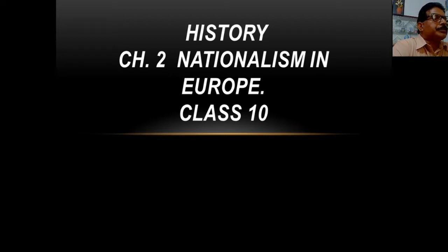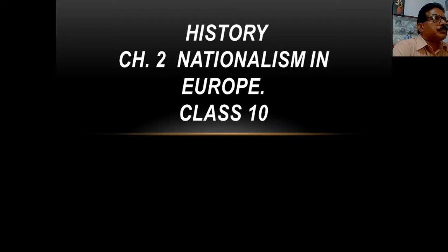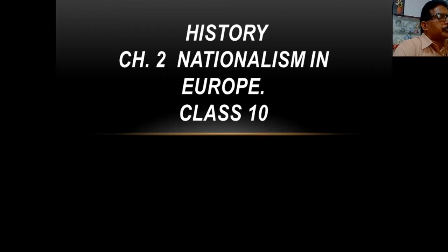Understand the question and write the answers. In the previous class on nationalism in Europe, we studied about what is a nation state, what is liberalism, what did liberalism stand for in the economical, social and political sphere. We studied about aristocracy, and what steps were taken by French revolutionaries to create a sense of collective identity among the French people. Now let us move on to the next question.